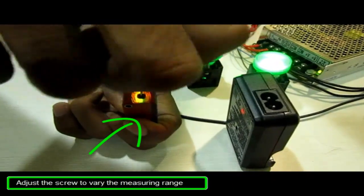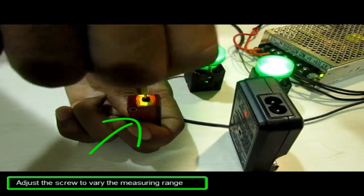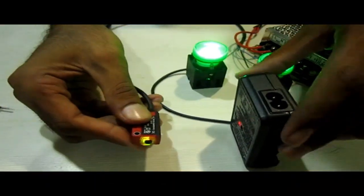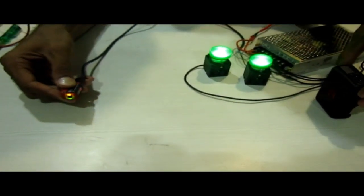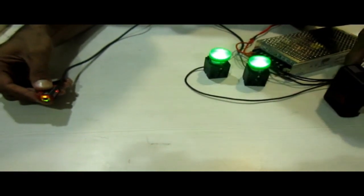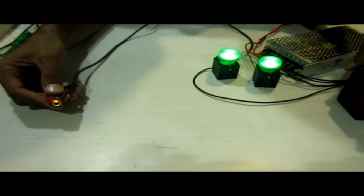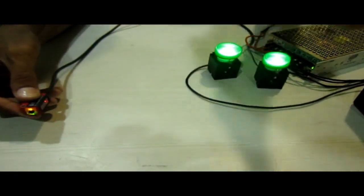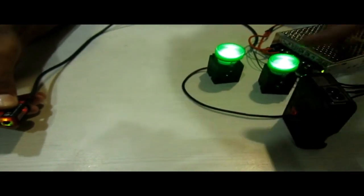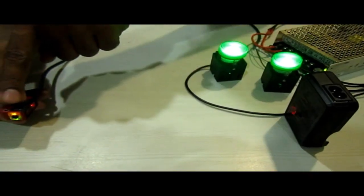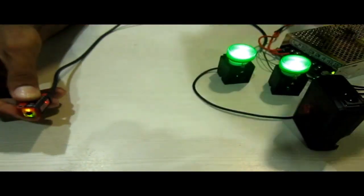Now to increase this range we have to vary its range by rotating this screw. I am adjusting this to maximum range. Now at this position you can see here I am increasing the distance and in that case sensor is on. So from this position I have to go back to this position. We can also adjust at this position by varying the screws. That's how we can vary the range according to our requirement.